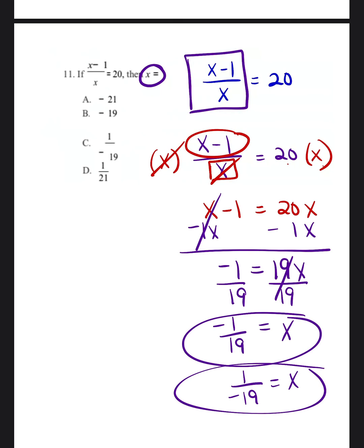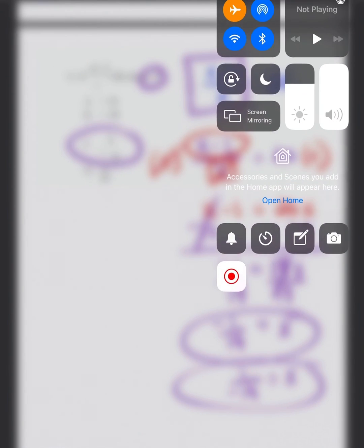So the answer will be C. x is equal to 1 over negative 19. Thank you.